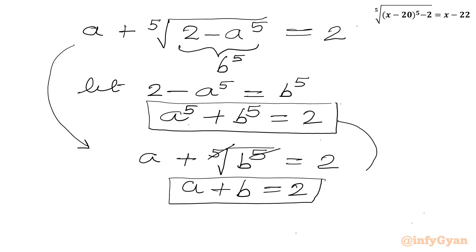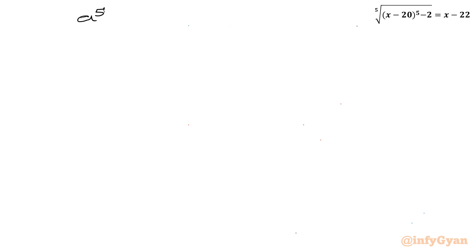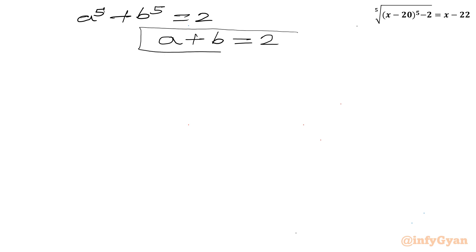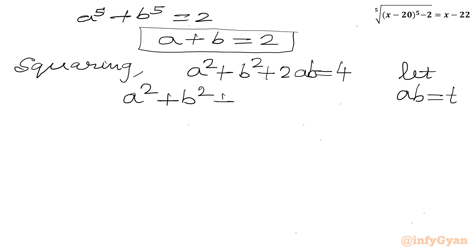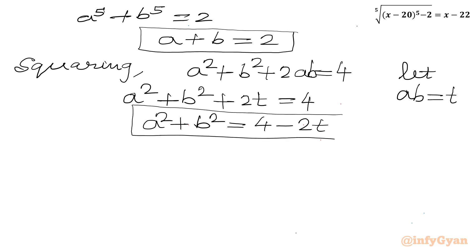So we now have a new system of two equations and we need to find the value of a, after which x is known. The equations are: a to the power 5 plus b to the power 5 equal to 2, and a plus b equal to 2. I will begin by squaring the second equation: a squared plus b squared plus 2ab equal to 4. Now let us assume ab equal to t, so a squared plus b squared equals 4 minus 2t. This is our third equation.